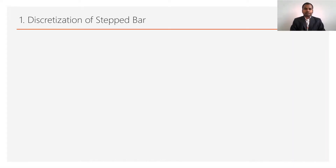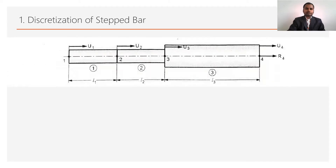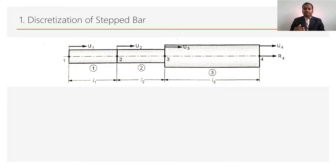Step number 1 is discretization — discretization of the body. In this stepped bar, we first discretize the body into a number of elements. For the division of the body into elements, the first condition is to divide the body from their cross sections. As shown in the figure, there are 2 cross sections in the body, so this body can be divided into 2 parts.